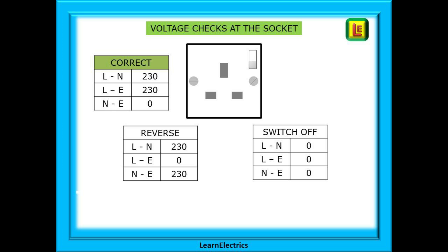A healthy socket, one that is wired correctly and switched on, will give the voltages as shown in the upper left table marked correct. Live to neutral and live to earth will give 230 volts nominal. Because neutral and earth are the same point electrically back at the substation, this will give a reading of around zero volts.